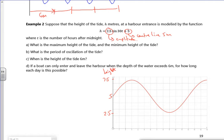So maximum height of the tide, minimum height of the tide. So max height, 7.5. Min height, 2.5.